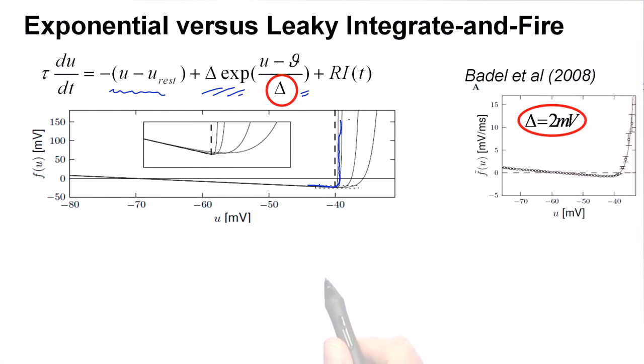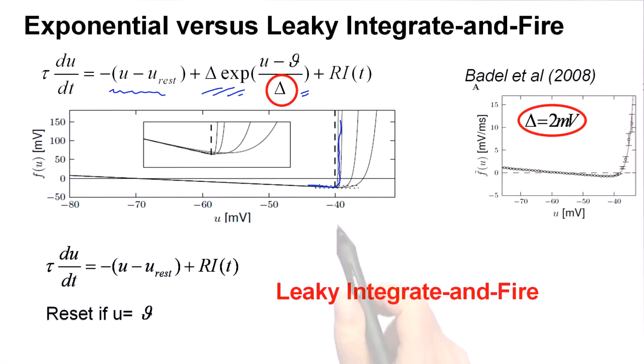Now let's consider what it means, a sharp transition. But let's make it sharper and sharper. If it's really sharp, then it's like saying the threshold sits right here, where the kink is, where the curve bends upwards. Thus, the exponential term for a very sharp delta can be replaced by just a sharp threshold. And that means we are back to the leaky integrate-and-fire model.